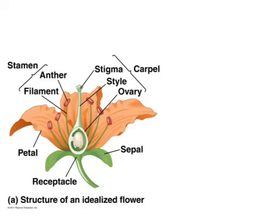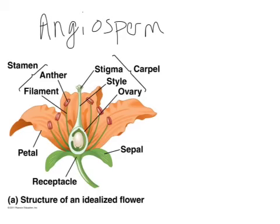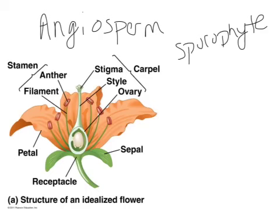Let's do a little flower review, or angiosperm review. Remember, angiosperms are flowering plants. The flower is the sporophyte generation — the diploid generation — and that's the main generation in our flowering plants. The carpel contains the stigma, the style, and the ovary.